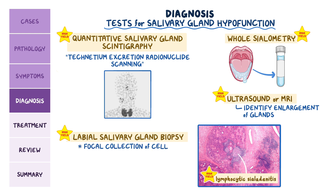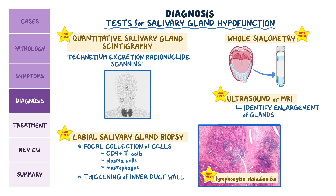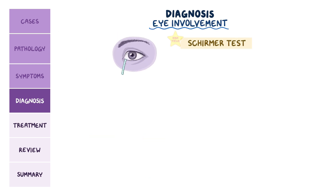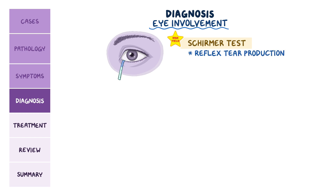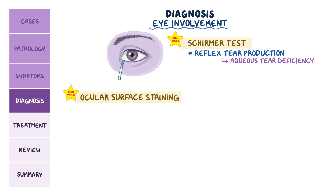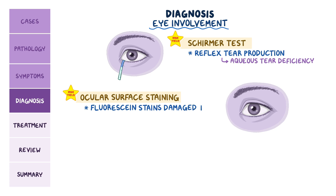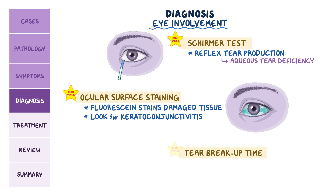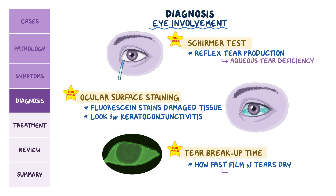The biopsy typically shows a focal collection of cells, especially CD4-positive T cells, plasma cells, and macrophages, and thickening of the inner duct wall. Eye involvement is tested by the Schirmer test, which measures reflex tear production and typically shows aqueous tear deficiency. Another test is ocular surface staining, where a dye like fluorescein is used to stain areas of damaged tissue, observed under a slit lamp to look for signs of keratoconjunctivitis. The final test is the tear breakup time, which assesses how fast the film of tears normally spread over the eyes while blinking takes to dry — in Sjogren's syndrome, this occurs faster than normal.